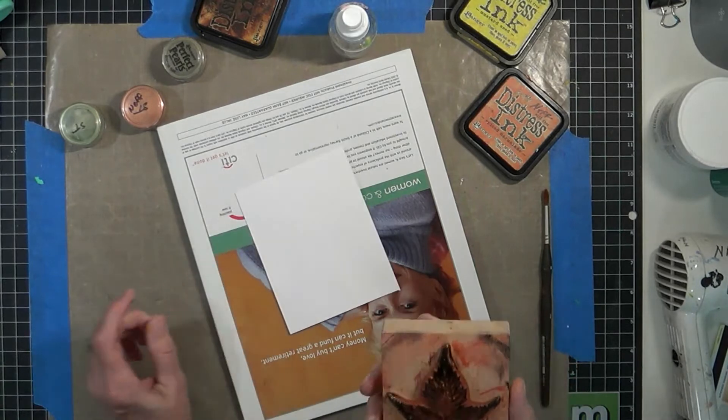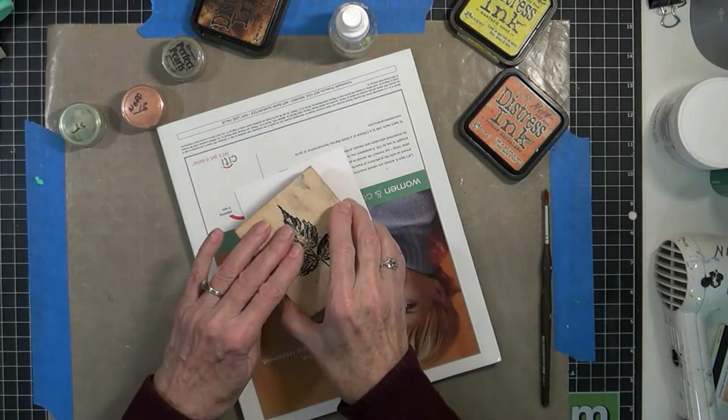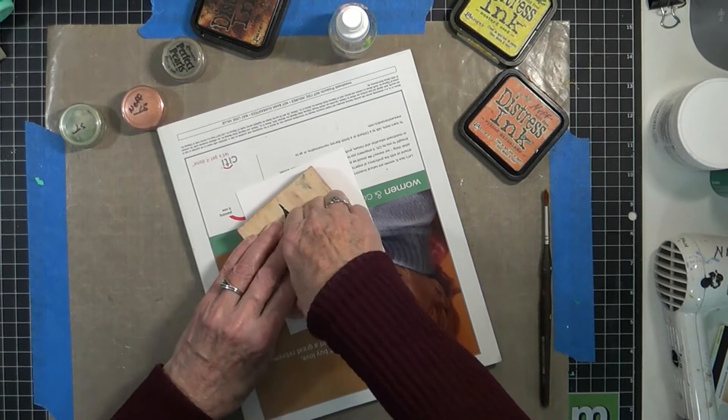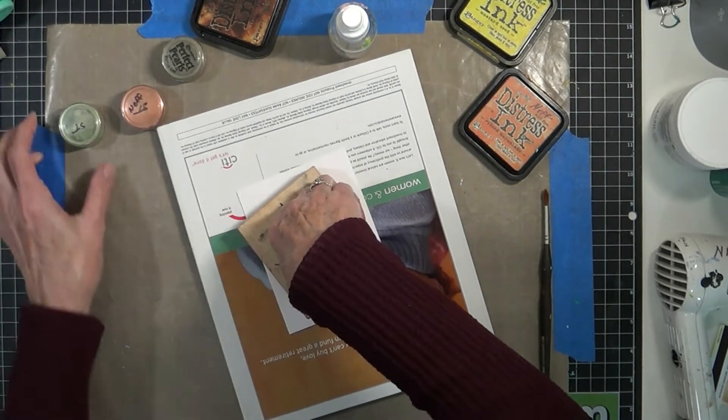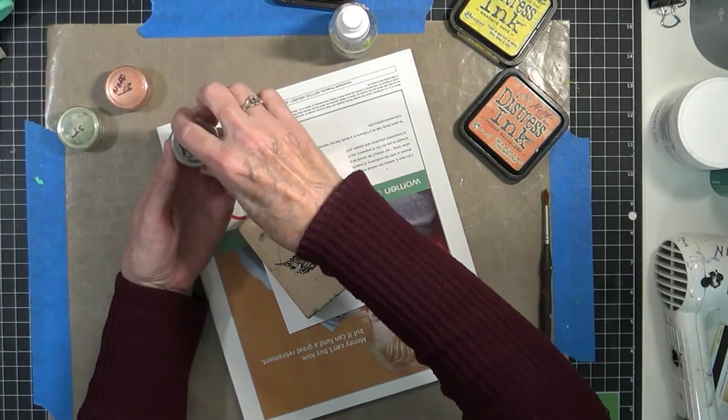And I'm stamping this on 90 weight mixed media paper and I think it has a vellum finish on it. So I'm just pressing that in using a magazine underneath to give me a bit of a cushion so I get a nice crisp image.